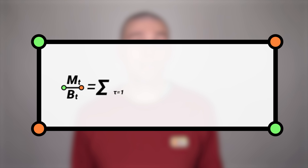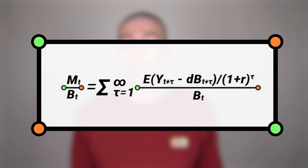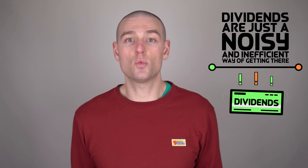This is exactly what valuation theory predicts. The dividend discount model says that the theoretical value of a share of stock is the discounted value of expected dividends per share. But with dividend policy irrelevance, the value of a firm is based on expected earnings minus expected investment. This is the theoretical basis for the factors in the five-factor asset pricing model. While portfolios formed on things like dividend yield or dividend growth may have exposure to low-priced stocks with robust profitability — which is a good thing — dividends are just a noisy and inefficient way of getting there.